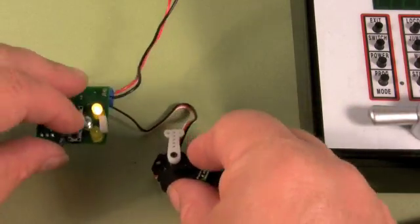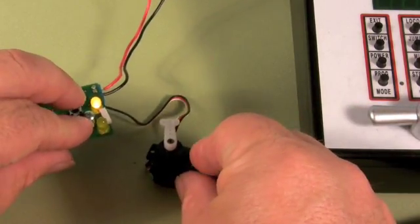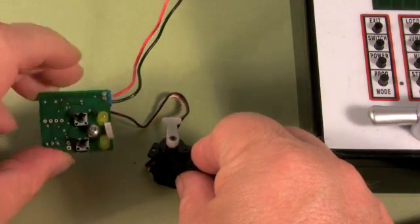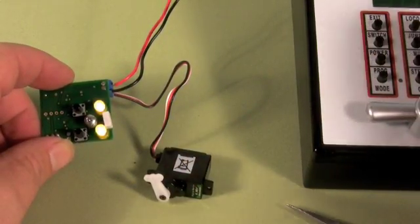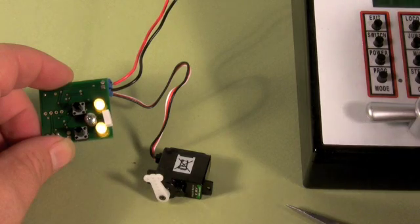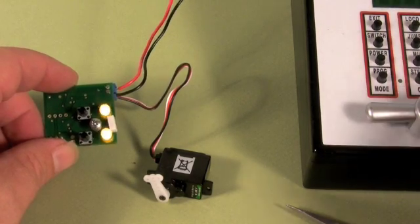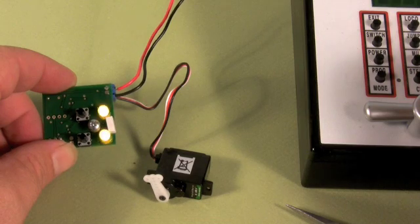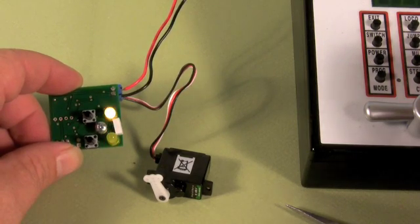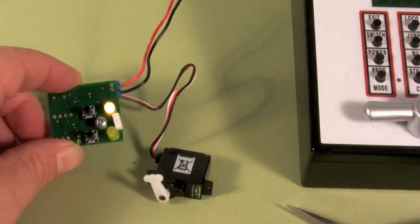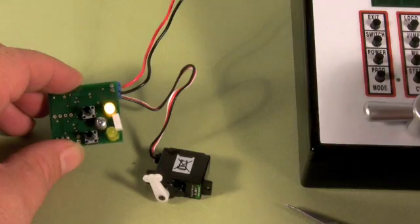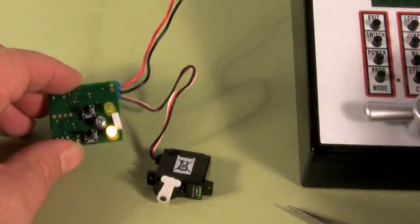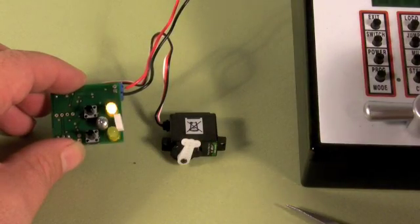Now if I want to put this on a different address, a different DCC address, hold down both buttons, both buttons are flashing so now we're in the DCC mode. Over here I'm going to select 005 for my address and I'll send it a DCC command, throw, and you see the light turned off and now the unit has been programmed for a DCC address of 5.